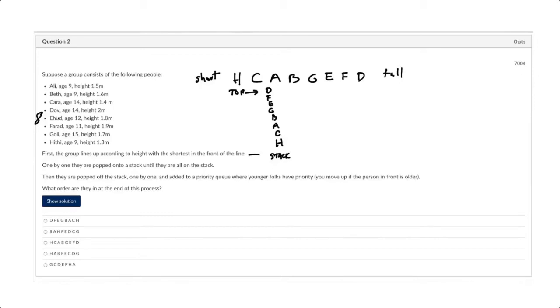And then they're popped off and they're added to a priority queue where younger folks have priority. So we pop off D, and we'll call this the front of the queue here. And so D is 14. And then F comes off, so F lands here, and Farad is 11. But it says younger folks have priority, so Farad's going to move up there. So I'm going to have now F, 11, and then D, 14.